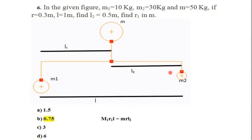Same problem again, but this time we need to determine R1 instead of L2. Using formula M1R1L = MRL2, with M1=10 kg, L=1 meter, M=50 kg, R=0.3, and L2=0.5, substituting gives R1 = 0.75 meter.